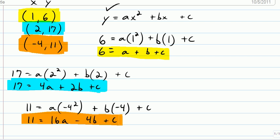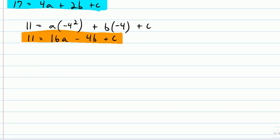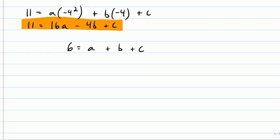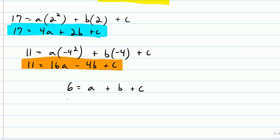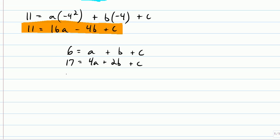So you've got the yellow, the blue, and the orange equation. So now, I mean, all that work I've done, I can kind of clean this thing up and I'm going to go down a page and I'm just going to write those three equations. So 6 equals a plus b plus c. 17 equals 4a plus 2b plus c. And 11 equals 16a minus 4b plus c.